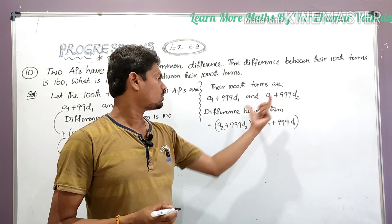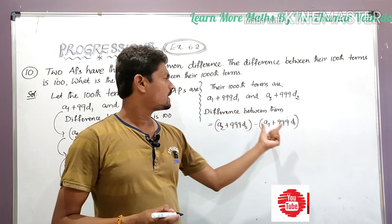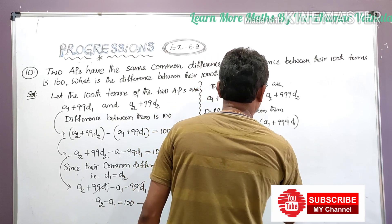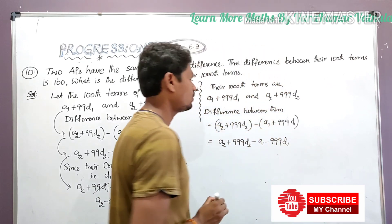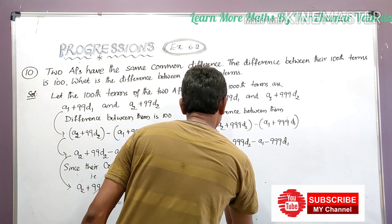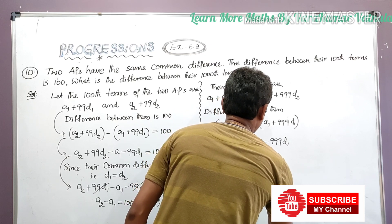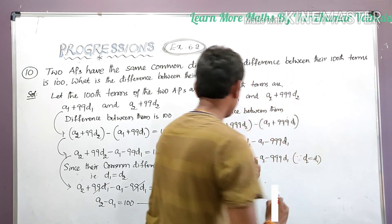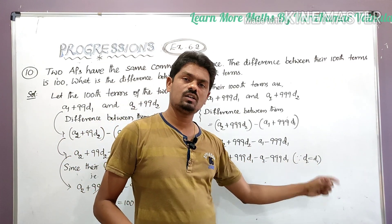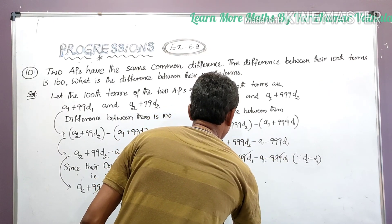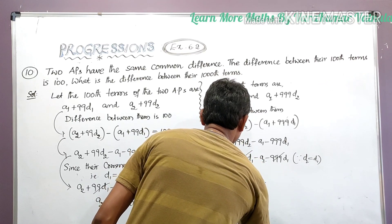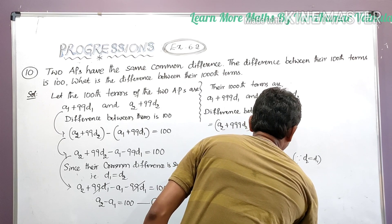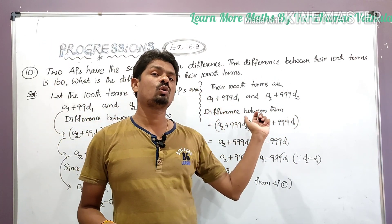Expanding: a2 plus 999d2 minus a1 minus 999d1. Since their common difference is the same, d2 equals d1, so we write: a2 plus 999d1 minus a1 minus 999d1. The 999d1 terms cancel, giving a2 minus a1. From equation 1, a2 minus a1 equals 100. Therefore the difference between their thousandth terms is also 100.